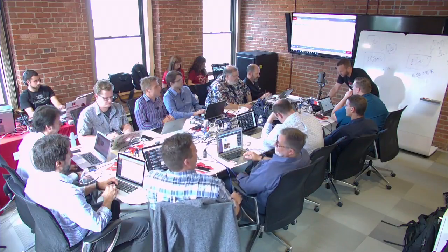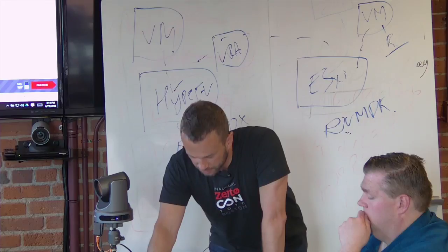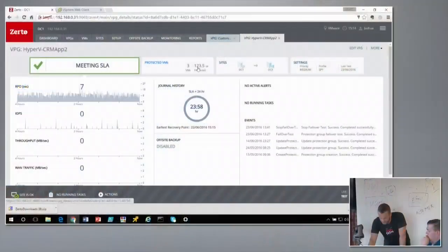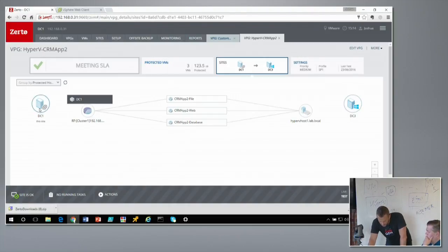What I want to do is show you a very quick demonstration of this. We come back to my interface here. We've got multiple protection groups and the one of specific interest is this protection group that is going from DC1, which is my VMware site, you can see by the logo, going to DC3, which is my Hyper-V site.